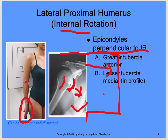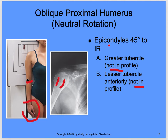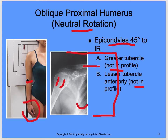For neutral rotation, the palm of the hand is against the thigh. Your epicondyles form a 45-degree angle to the bucky. Neither the greater nor the lesser tubercle is in profile — both are anterior. Collimation is opened a little wider to include the inferior angle of the scapula and the clavicle to the SC joint.